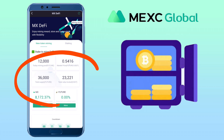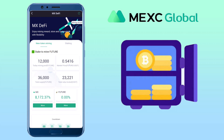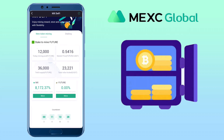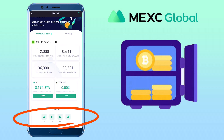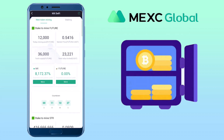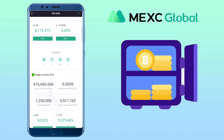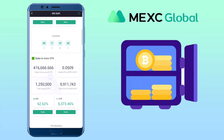Here, you will see the token mining pool, market price, total supply, total value locked, and expected annualized yield if you stake MX token or the token itself. Below will be the time remaining to do farming on that coin. You can scroll down to select the coins to farm.